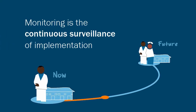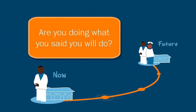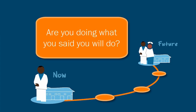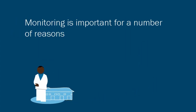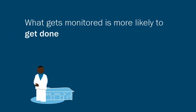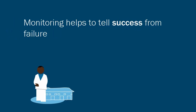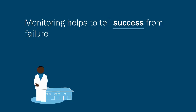Monitoring is the continuous surveillance of the implementation of a program or project. Monitoring activities check if a project is proceeding according to the plan — are you doing what you said you will do? Monitoring is important for a number of reasons. What gets monitored is more likely to get done. If you don't monitor performance, you can't tell success from failure.